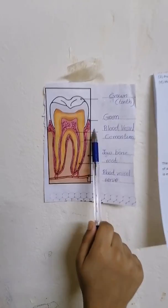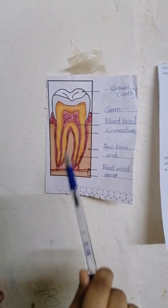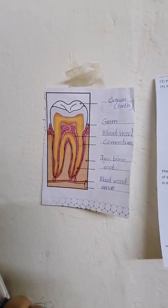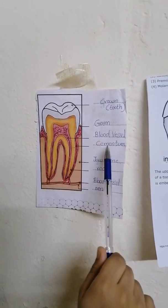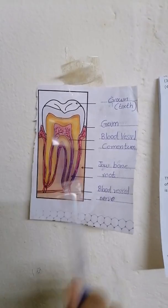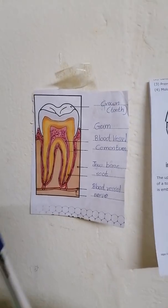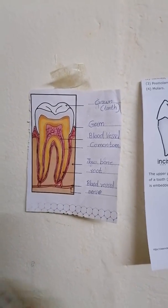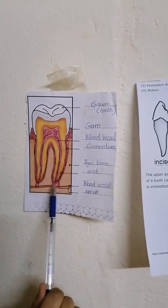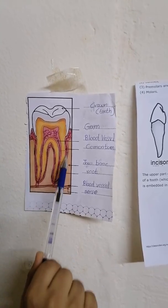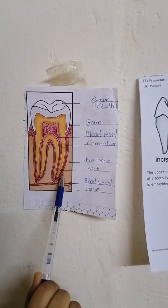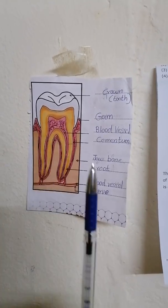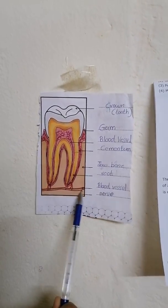This pink thing you see is the gum. The gum helps hold the tooth firmly. And this yellow thing you see is the periodontal ligament. It helps hold the tooth in the jaw bone. And this skin-colored part is the jaw bone.